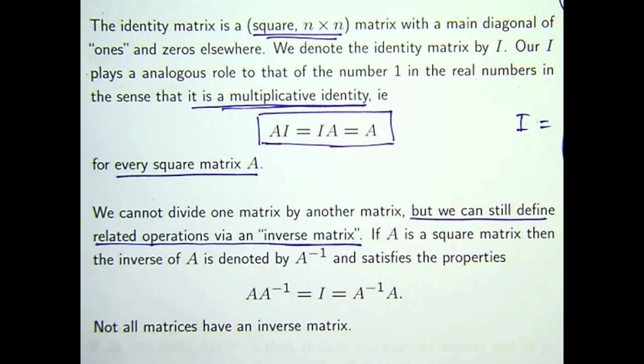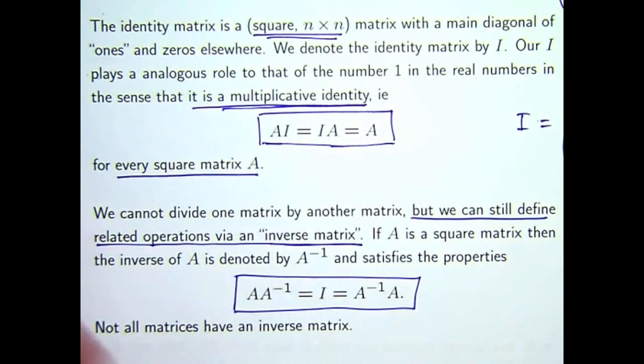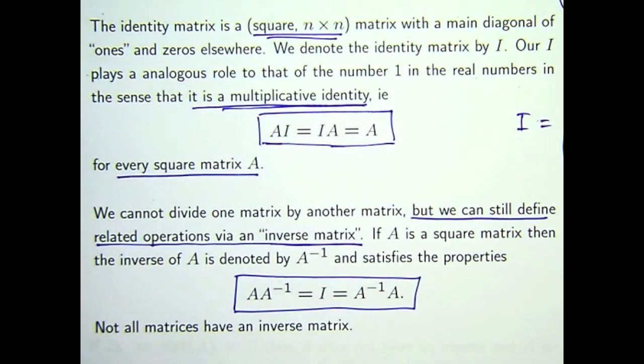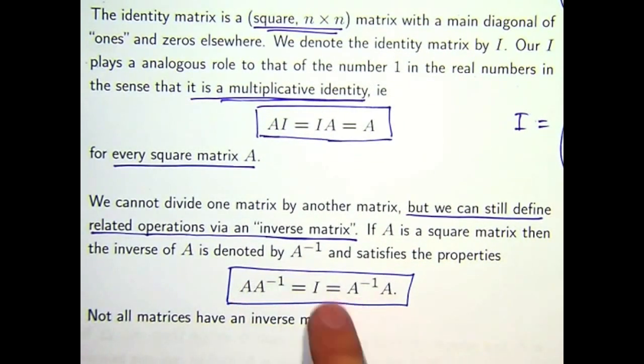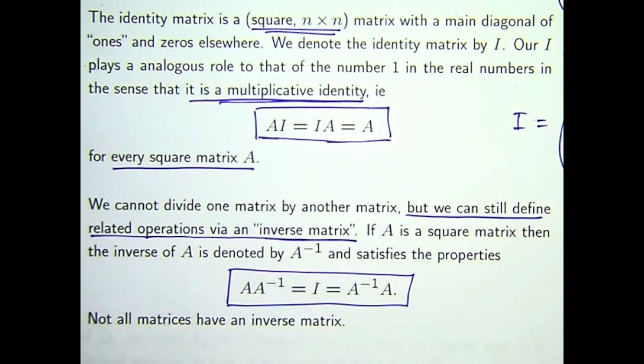So suppose A is a square matrix. The inverse of A is denoted by this with the little minus 1 superscript and is a matrix that satisfies the following properties. If you take A and you multiply by its inverse, the product is the identity matrix. And it doesn't matter which way around you do this, for inverse matrices they have to be able to switch the order around and still multiply to give you the identity in both cases.